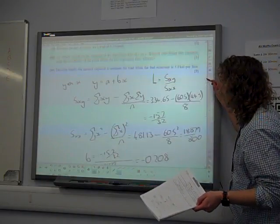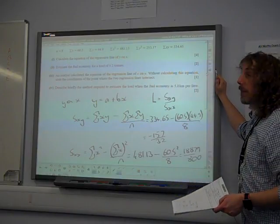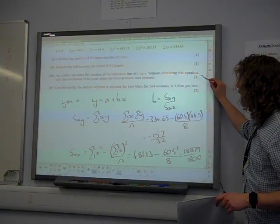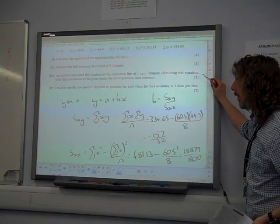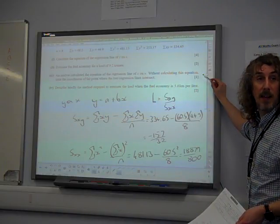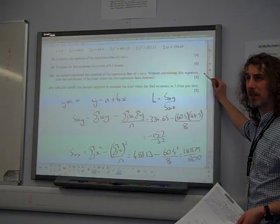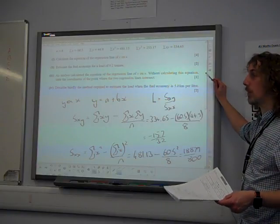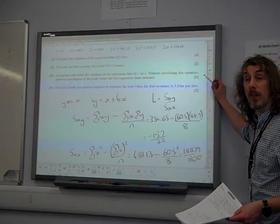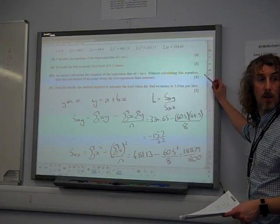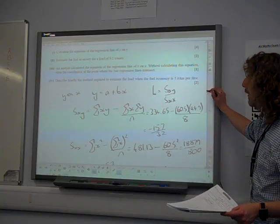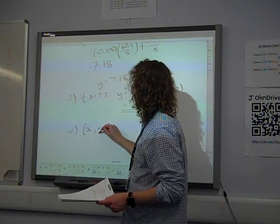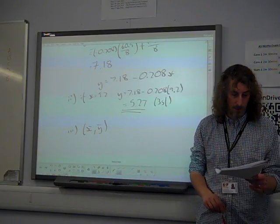Part three. An analyst calculated the equation of the regression line of x on y. We have the y on x regression line. Now, without calculating this equation, state the coordinates of the point where the two regression lines intersect. This is mega straightforward because we've talked about this so many times. The only point that you can guarantee that the two regression lines go through is, we call it the centroid, x bar, y bar, the mean of both.